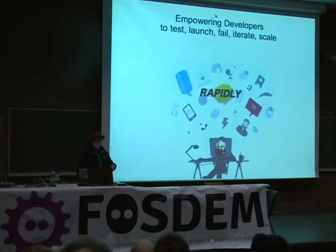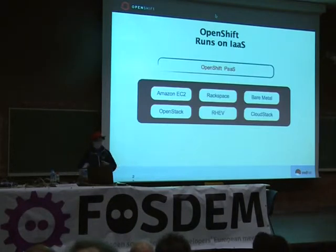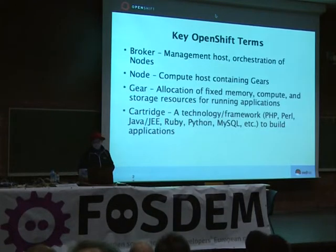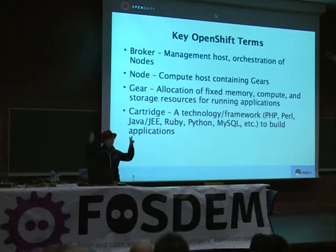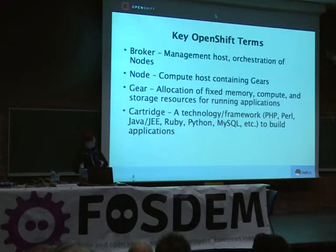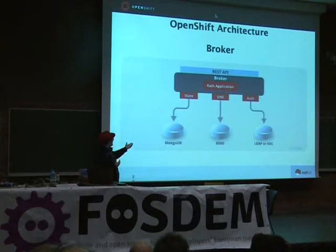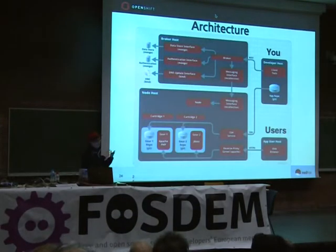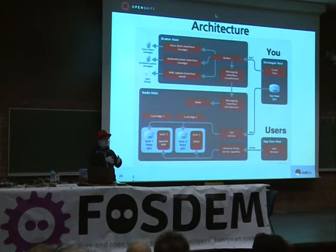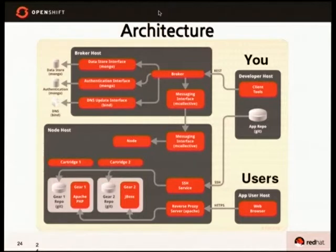It gets everybody there very fast and runs on any infrastructure — it doesn't necessarily have to run on a cloud; it can run on bare metal. Key terms: the broker is the thing monitoring and managing all of what we call nodes, which are groups of gears. Your application runs within the gear, and the cartridge is the technology or framework package that gets pushed into that gear. The broker manages state, DNS, authentication, and monitors the health of all nodes. When spinning this up on OpenStack, you create one image for a broker and one clonable one for nodes. More info at openshift.github.io.